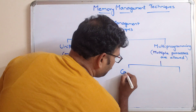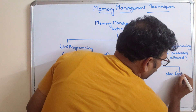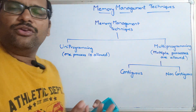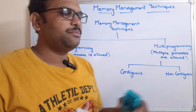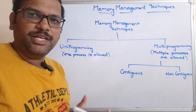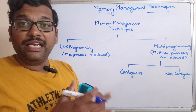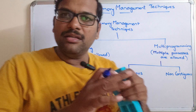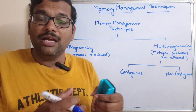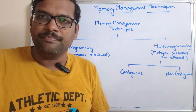The two categories of multi-programming are contiguous and non-contiguous. Contiguous means continuous memory locations — the complete memory will be allocated in continuous blocks. Non-contiguous means it is not necessary to maintain sequence; wherever free memory is available that will be allocated to the process.